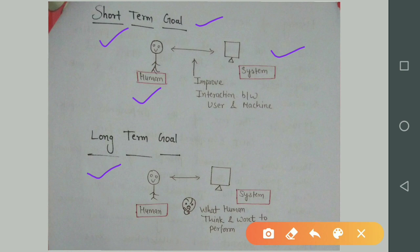And our long-term goal is to design the system that minimizes the barrier between the human's cognitive model of what they want, what they think, what they want to perform on a machine. According to human being's mind, machine can perform the task. This is our long-term goal.